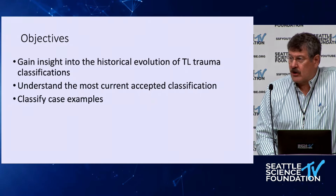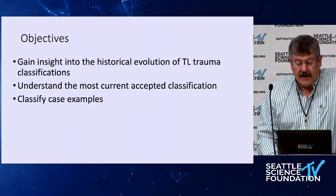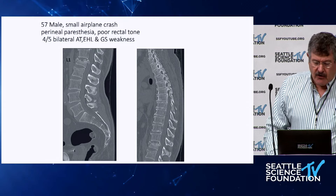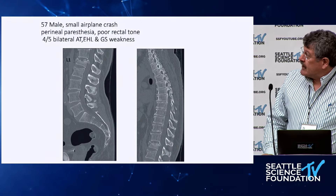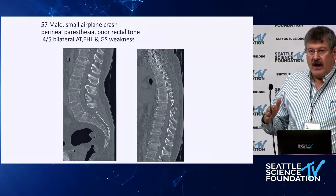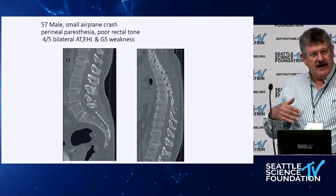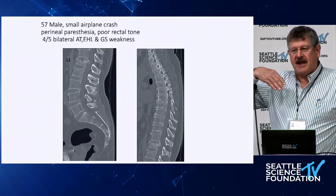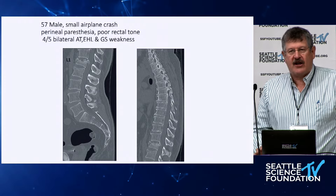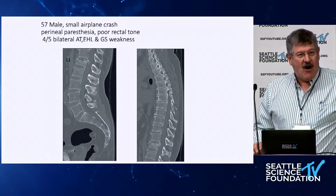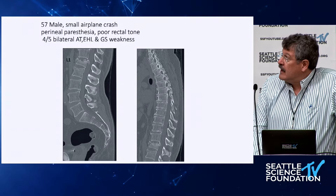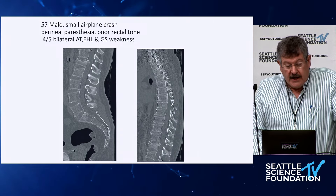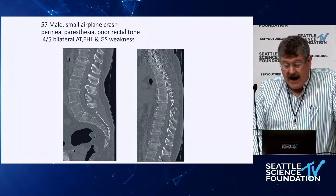We want to gain insight into the historical evolution and understand the current accepted classification. Here's a case example: a 57-year-old male involved in a small airplane crash. He's actually a physician; he and his brother — one lives in Alabama, one in West Virginia. At the Alabama-West Virginia home-and-away series, his brother flew up in a small plane and they crashed on takeoff. They both had almost identical fractures — one had a deficit and one didn't. He had perineal paresthesias, poor rectal tone, and some weakness in his feet and ankles.